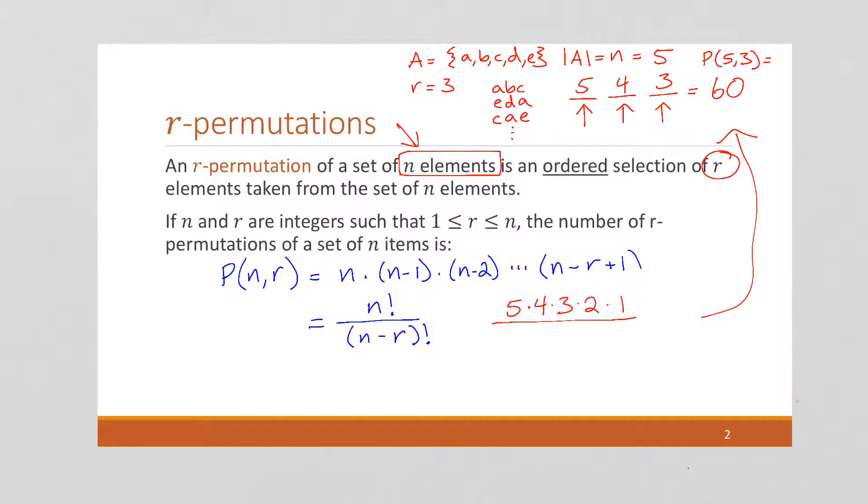And now I want to divide it by n minus r. Well, remember n is 5 and r is 3, so this is going to be 2 factorial, which is 2 times 1. And what's going to happen is that these cancel out, and we're left with exactly what we came up with right there.